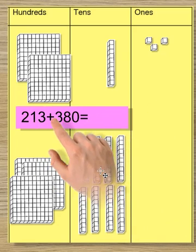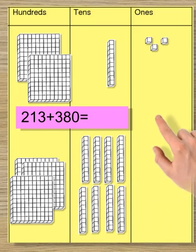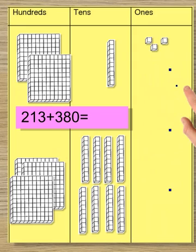So 213 plus 380, much easier to add because there's no renaming. First of all, you can see that three ones plus nothing makes three ones.